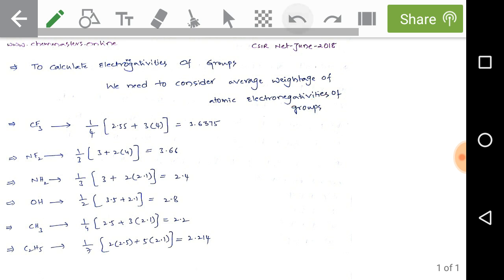After calculating these electronegativities, we can eliminate the first option. The sentence that CF3 has greater electronegativity than NF2 is wrong because CF3 and NF2 have nearly same electronegativity values.